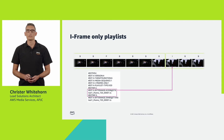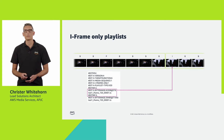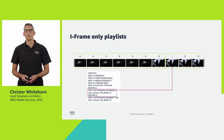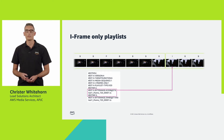HLS allows you to decorate one or more playlist manifests with iframe-only. The nice thing about this is that it doesn't require additional media files — it's simply a reference to iframes in one or more existing video renditions. An iframe, in case you don't know, is an independently decodable frame of video, as opposed to B and P frames which require information from adjacent video frames to be able to decode them.